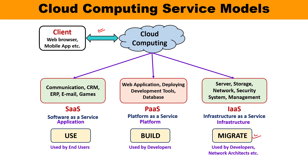Platform as a Service means a platform is available that can be utilized as a service — for example, web applications, deploying development tools, and databases. PaaS is basically used by developers. The third model, SaaS, means software is available that can be used by multiple clients. It is used by end users for things like communication, CRM, ERP, emails, and games. A game is available and many users can access it with no need to download anything — it can be accessed via web browsers only.